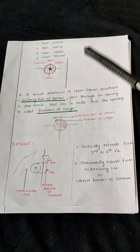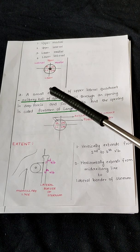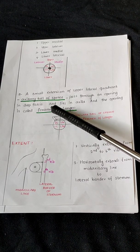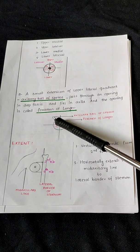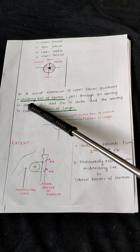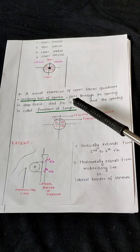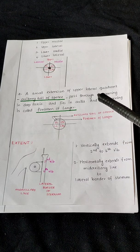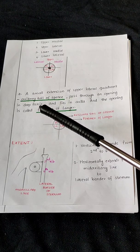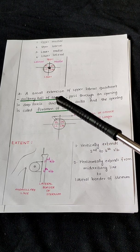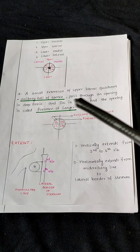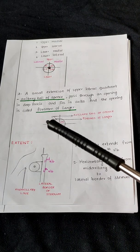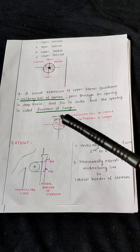A small extension of the upper lateral quadrant is called the axillary tail of Spence. This axillary tail passes through an opening in the deep fascia and lies in the axilla. The opening in the deep fascia through which it passes is called the foramen of Langer.